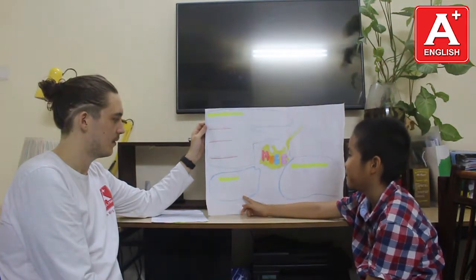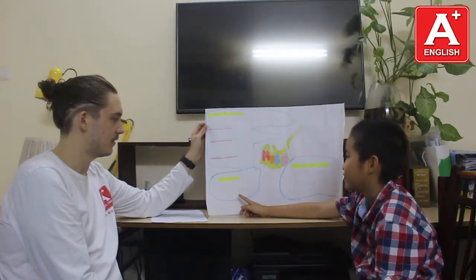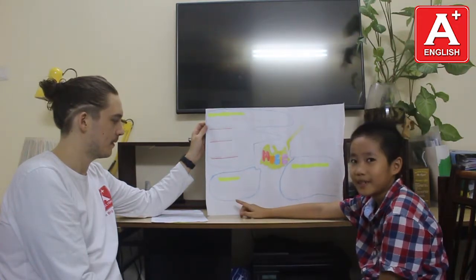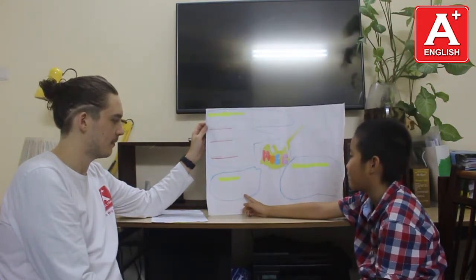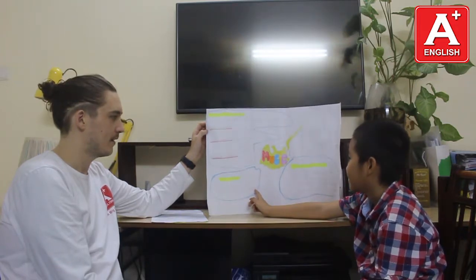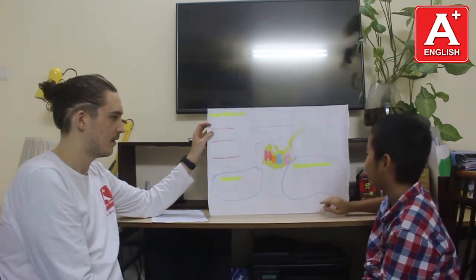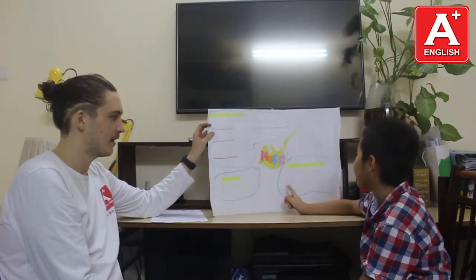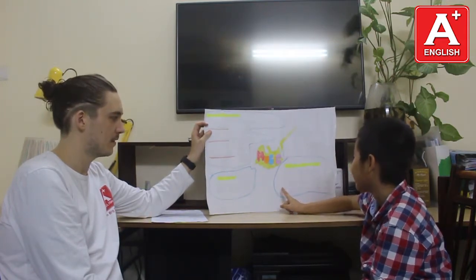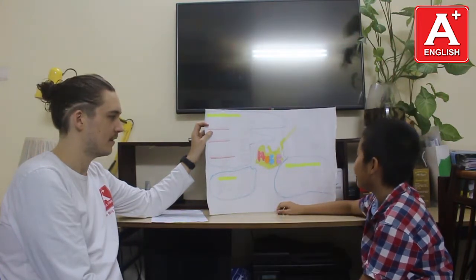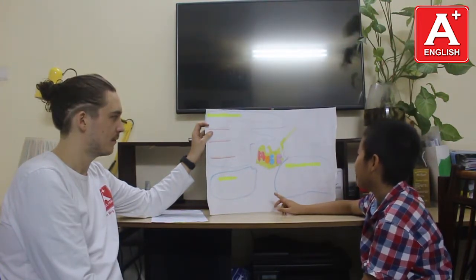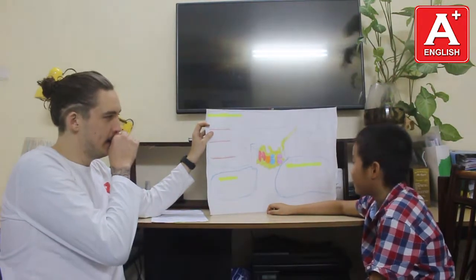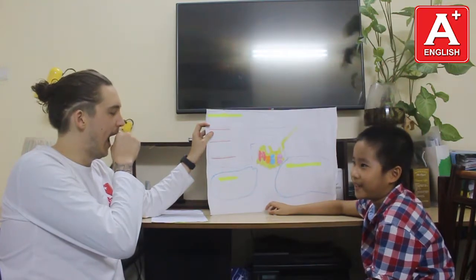Second, I talk about music genres. We have rap, hip-hop, singing, K-pop, and karaoke. And finally, I talk about different kinds of music. We have fast music and slow music. Fast music makes us feel happy, and slow music makes us feel sleepy.